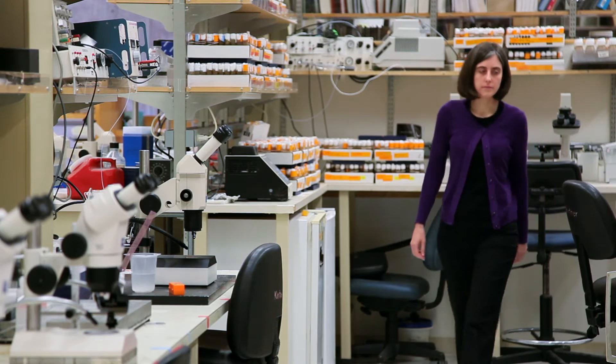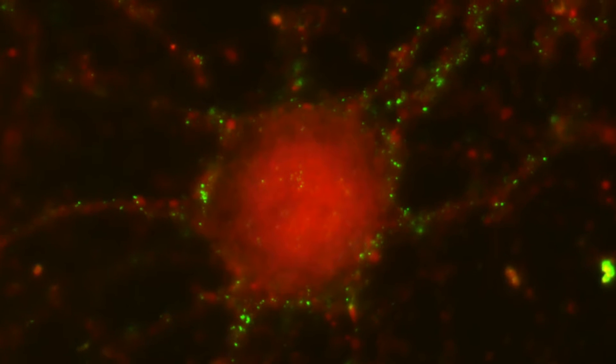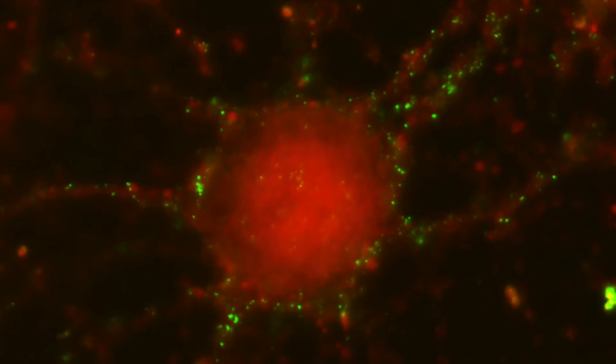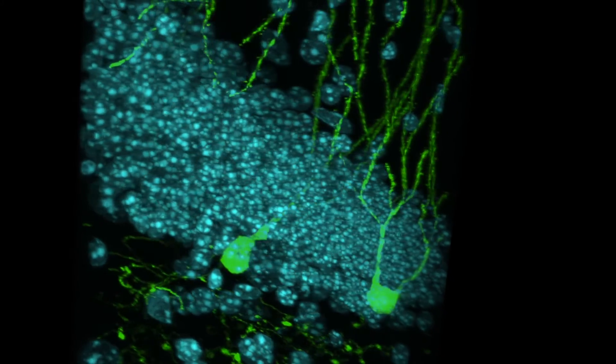The research in my lab focuses on how the brain normally forms during development. We think it's very important to understand how this process normally occurs so that we can understand what goes wrong in neurodevelopmental disorders such as autism, particularly at the level of looking at how neurons normally form connections with each other.